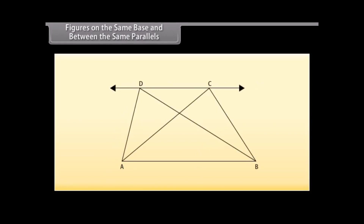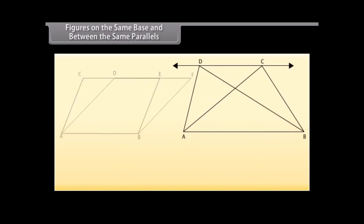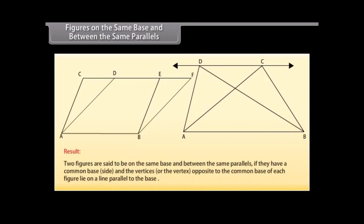Similarly, in this figure, the triangles ADB and ACB both lie on the same base AB. So we can say that two figures are said to be on the same base and between the same parallels if they have a common base side and the vertices or the vertex opposite to the common base of each figure lie on a line parallel to the base.